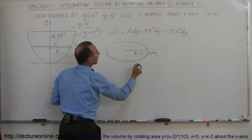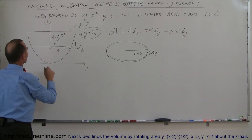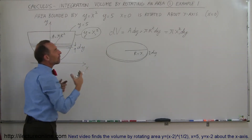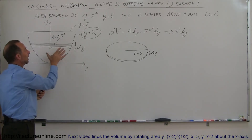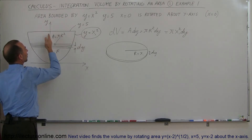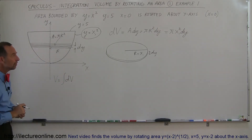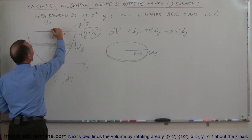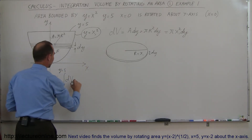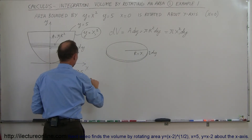So when I plug that in, my volume element dV is equal to pi times x sub 1 squared dy. To find the whole volume, I take all the little slices — all the dVs — and add them up. The whole volume equals the integral of all the dVs, integrating from y equals 0 to y equals 5, because those are the given upper and lower limits. So this is equal to the integral from y equals 0 to y equals 5 of pi x sub 1 squared dy.